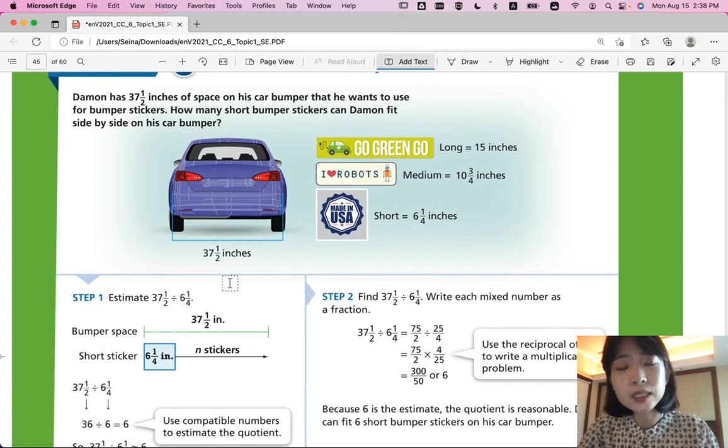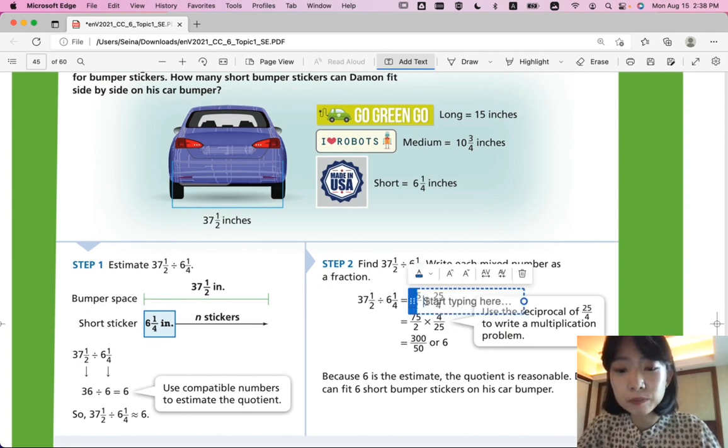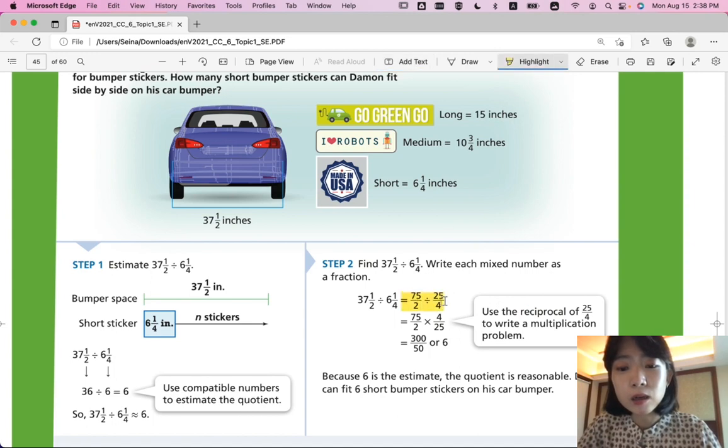So, how many of them can we fit? We're going to estimate and see about where we would expect our answer to be. So, 37 and 1 half is about 36. 36 and 6 fourth is about 6 and they're compatible numbers. 36 divided by 6 is exactly 6. So, the answer is going to be around 6. Now, let's figure it out exactly. We're going to write them into a fraction and then we're going to rewrite them with a multiplication using the reciprocal and multiply them 300 over 50 and divide it to simplify to exactly 6. So, 6, it was the estimate and it is an exact number, exact answer. So, you know your answer should be reasonable and it is correct. He can fit 6 short bumper stickers on his car bumper.